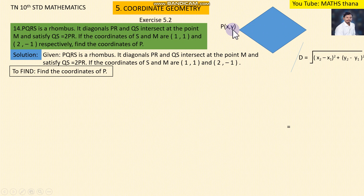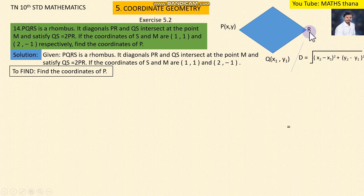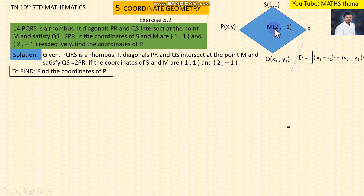Let P be (x, y). S is (1,1) and the midpoint M is (2,1). Since M is the midpoint of the diagonal QS, we can use the midpoint concept.